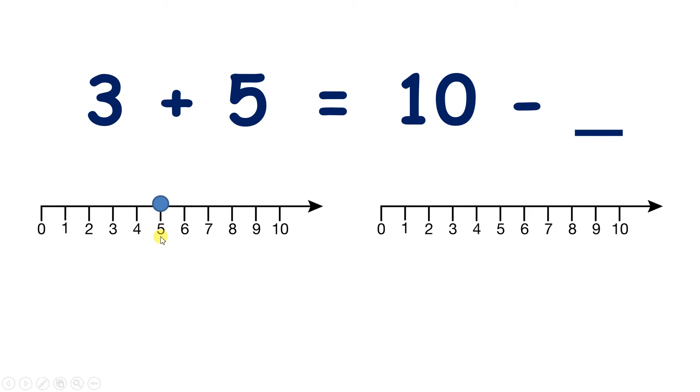So let's start on 5, and go along 1, 2, 3. So we've landed on the number 8, so we know 3 plus 5 is 8.